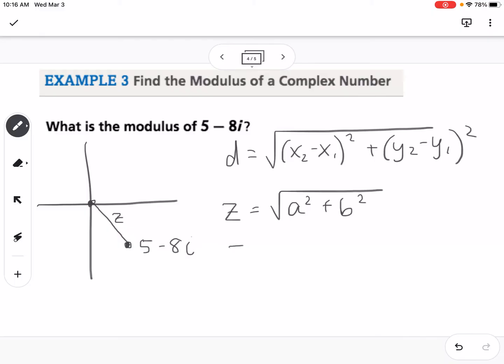So that would be, in this case, we'd be taking the square root of 5 squared plus 8 squared, which would be the square root of 89. So that would be our distance from 0, which is the modulus of the complex number.